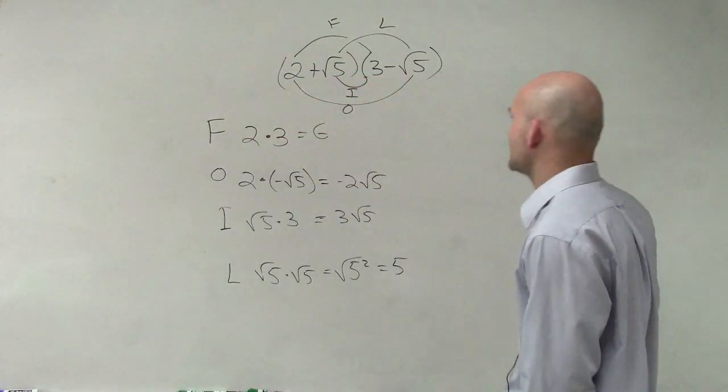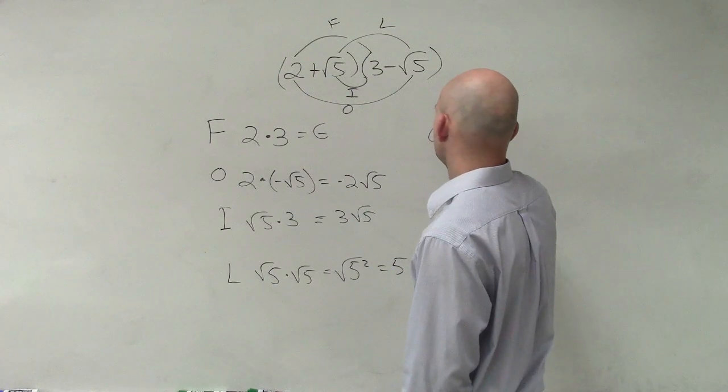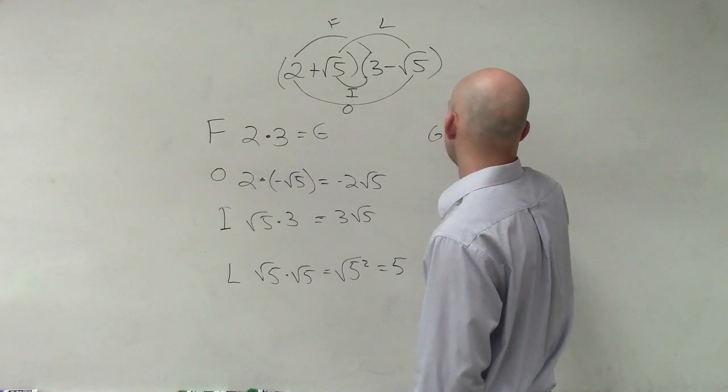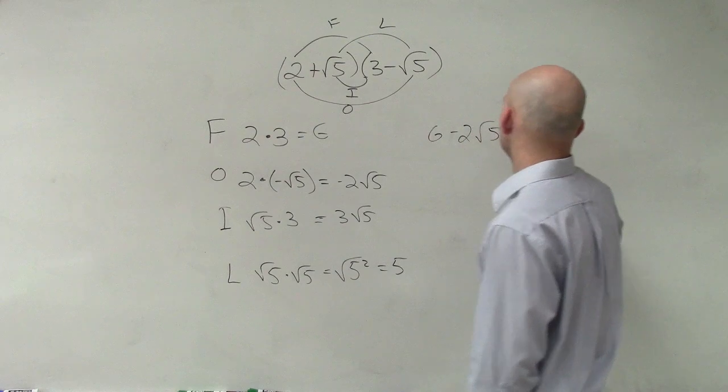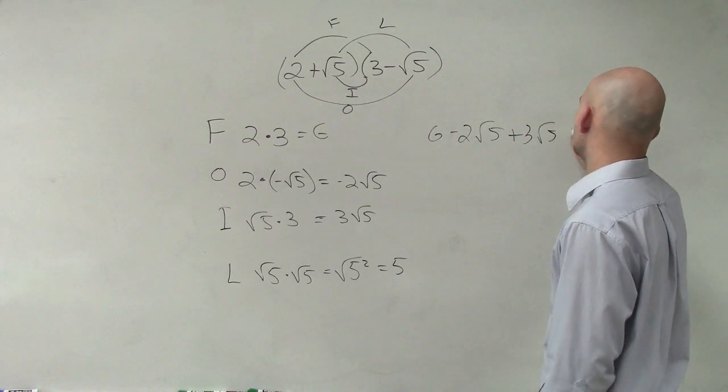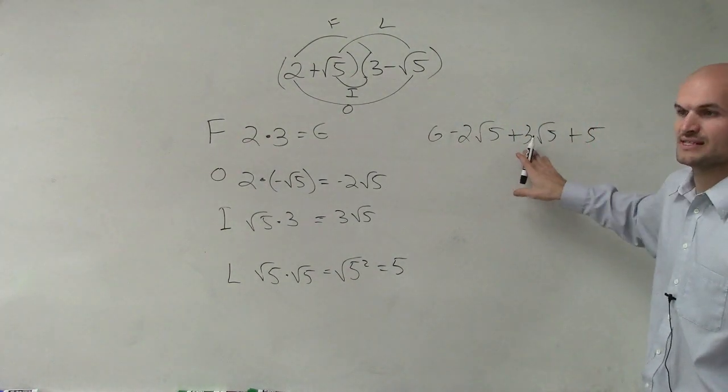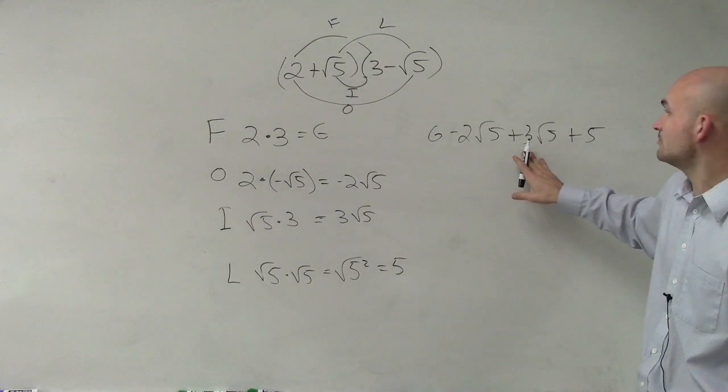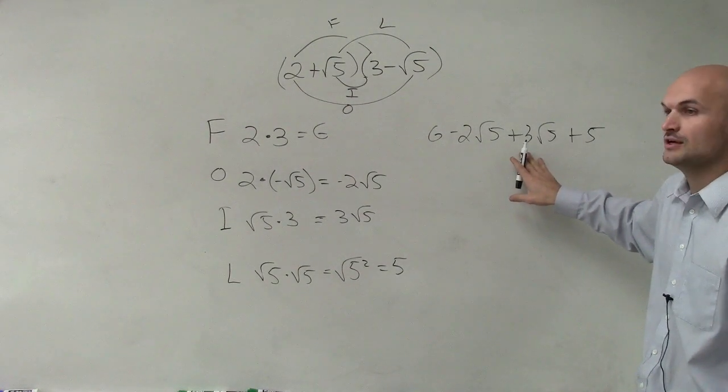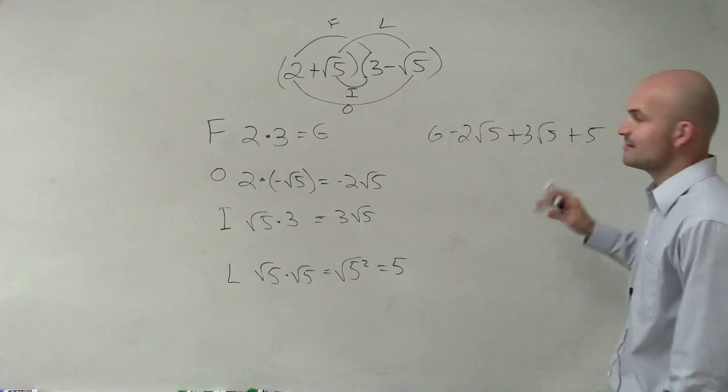Then we write out our answer. 6 minus 2 square root of 5 plus 3 square root of 5 plus 5. Well, these two terms, since they both have the square root of 5, we can combine them to positive square root of 5.